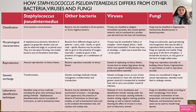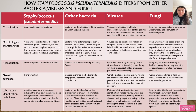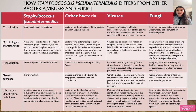They also differ in reproduction because they reproduce asexually via binary fission. Staphylococcus pseudintermedius also differs from other bacteria, fungi, and viruses in its genetic exchange, in that its form of genetic exchange is transformation. It further differs in laboratory identification techniques, being identified using various methods including gram stain techniques, blood plating methods — because it shows incomplete beta-hemolysis — as well as biochemical tests.